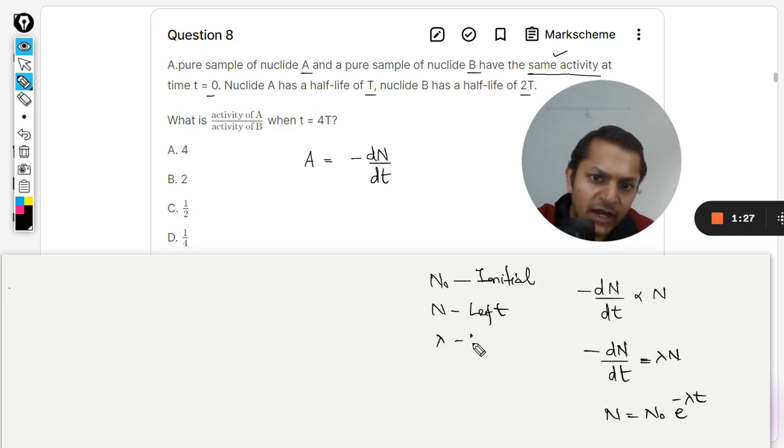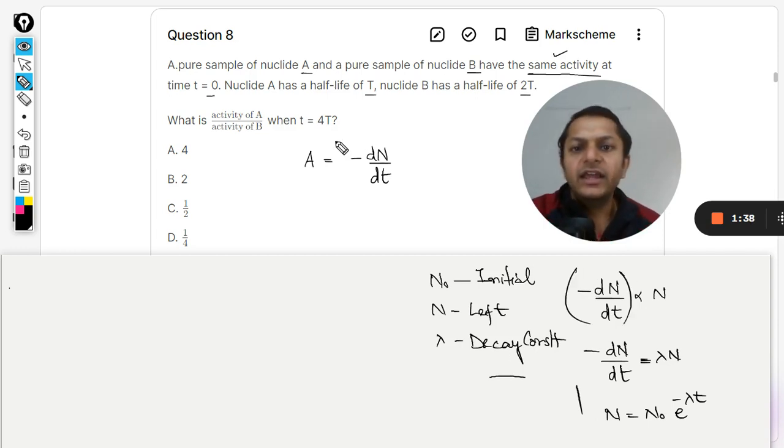And lambda is decay constant. This is a bit of theory that I am giving here for the radioactivity. But this factor negative dN/dt, it is taken to be A and A is the activity of the radioactive sample. Activity means which radioactive sample is having more speed. If somebody is having more speed of disintegration, we just say that the activity is really very high.